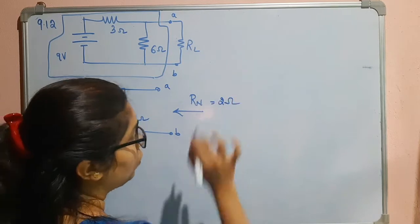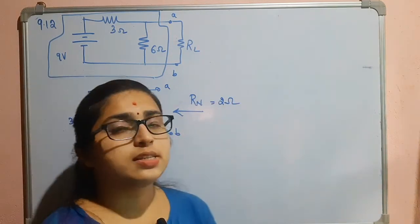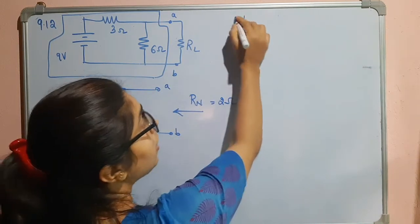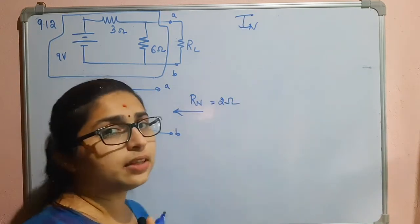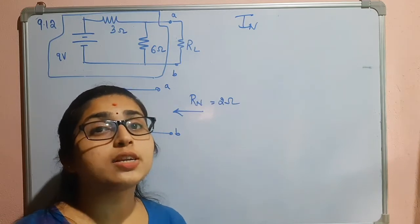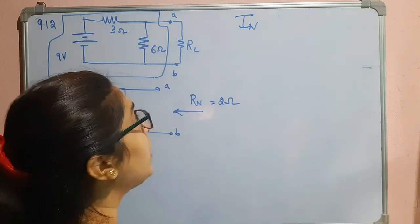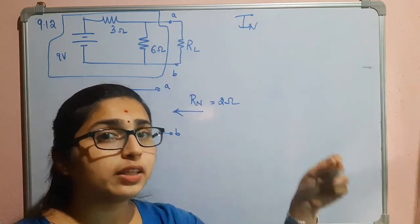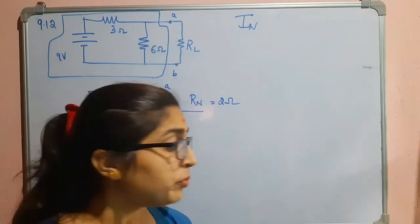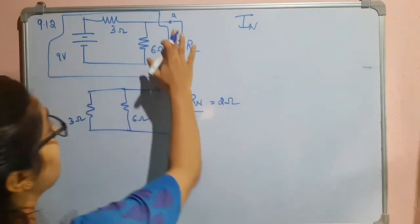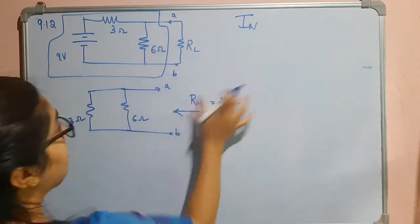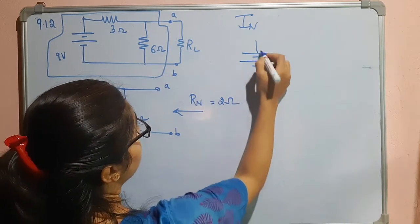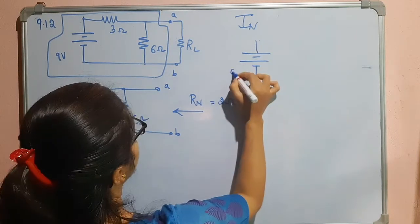After finding the Norton's resistance, we find the Norton's current In. The Norton's current is also called the short circuit current — that means when the marked terminals a and b are shorted, you find the current passing through that shorted path. To do this, I will short the path and bring back all the sources to their respective positions, with the 9 volt source, 3 ohm, and 6 ohm restored.